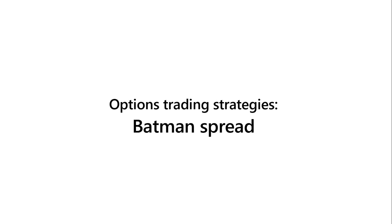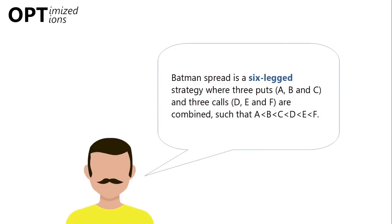The first thing to notice is that the Batman spread is a six-legged strategy where we combine three puts — let's label them A, B, and C — and three calls: D, E, and F, such that A is less than B, which is less than C, which is less than D, which is less than E, which is ultimately less than F.